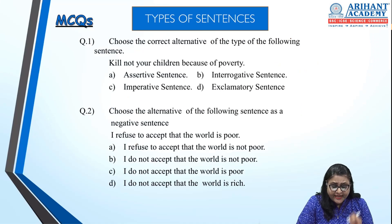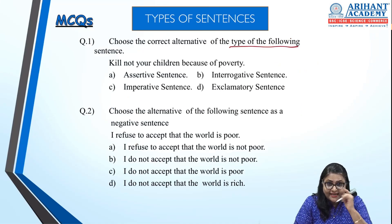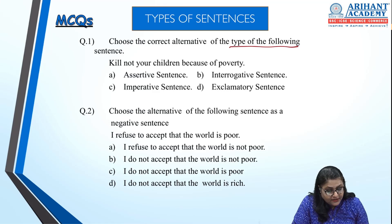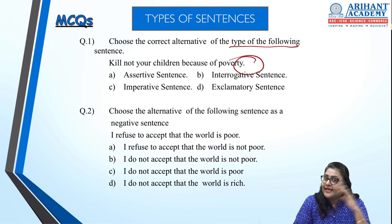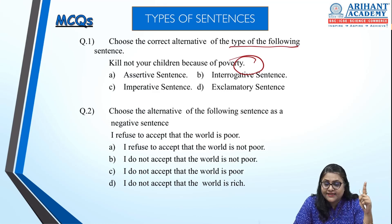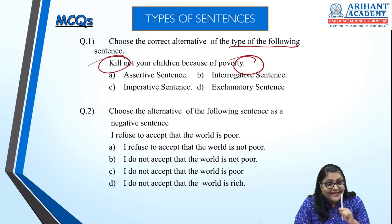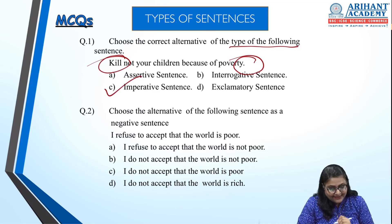Let's start with MCQs. First: choose the correct type of the sentence 'Kill not your children because of poverty.' Imperative sentences begin with a verb. Here you can see a full stop, so it can't be exclamatory or interrogative. The sentence begins with the verb 'kill', so it is an imperative sentence. The correct answer is imperative.